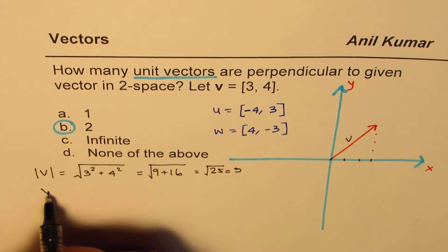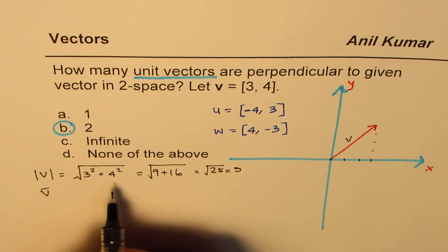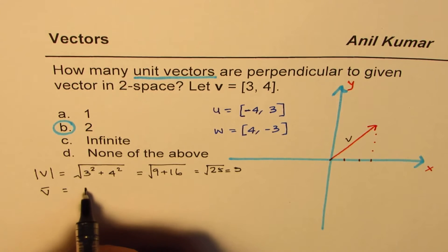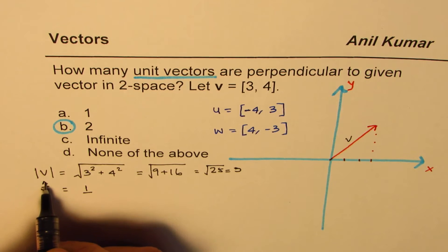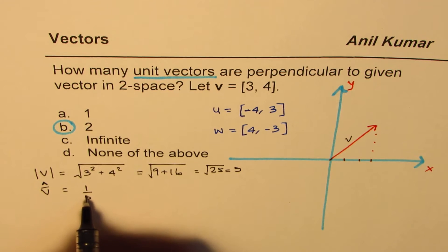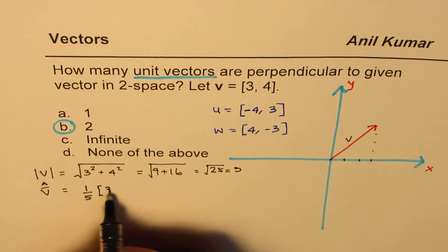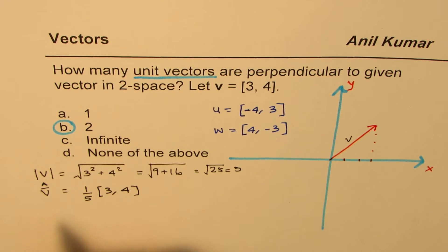So the unit vector in this direction will actually be one-fifth of this. It will be one-fifth. The unit vector is one-fifth of [3, 4].